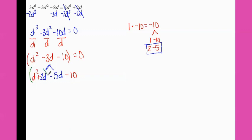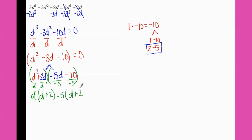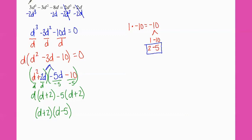Now let's group: group the first two, group the second two. These both have a d in common, giving d times d plus two. Both of the second two terms have a negative five in common, giving negative five times d plus two. So my factors are d plus two and d minus five. I also have to go back and bring down my GCF of d and the equal zero.